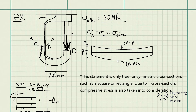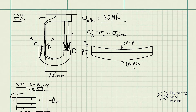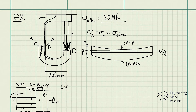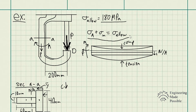Due to the geometry, the neutral axis is going to be actually closer to the tensile portion of the bending. The neutral axis is going to be closer to the bottom, so we're going to have a smaller C value due to that. We're going to be using the tensile stress due to bending to solve for the maximum P value.